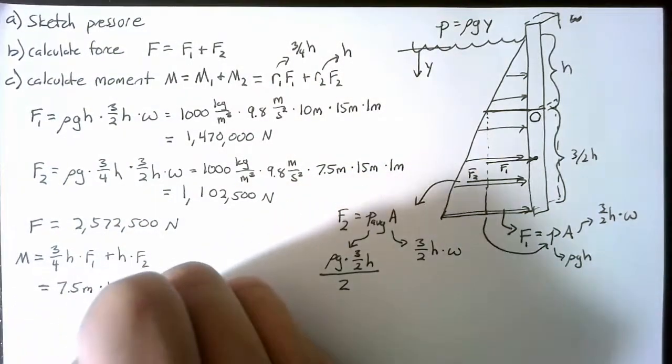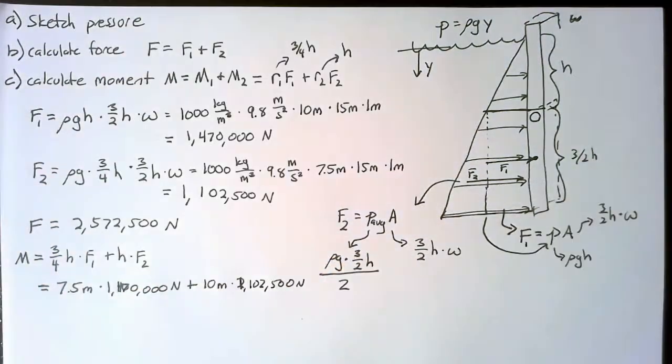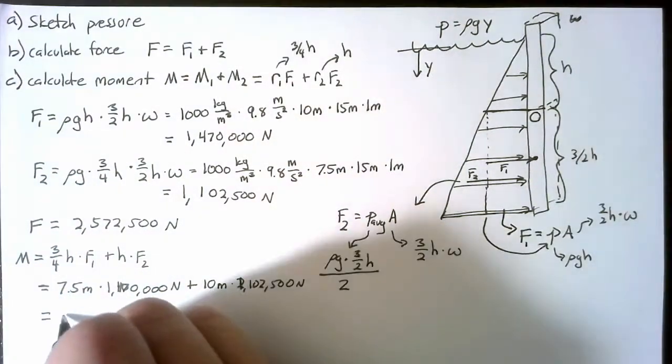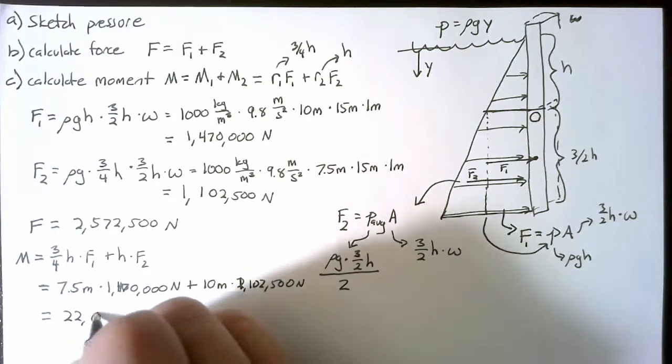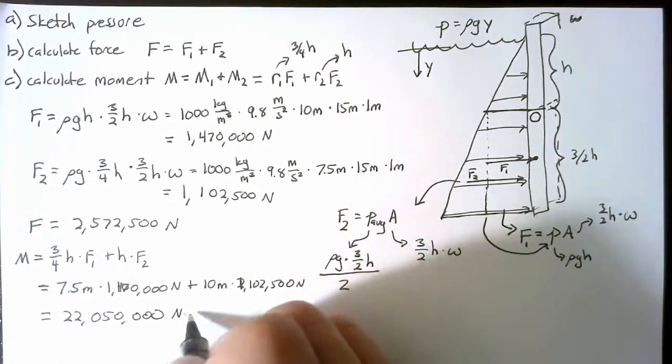Writing it out. And then finally plugging all this into a calculator. We end up with 22,050,000 newton meters, just as before.